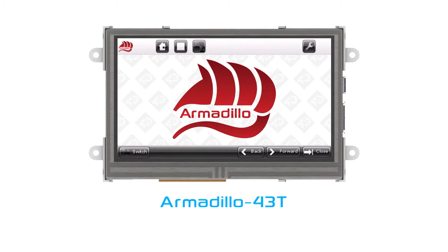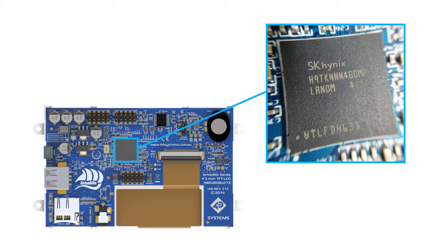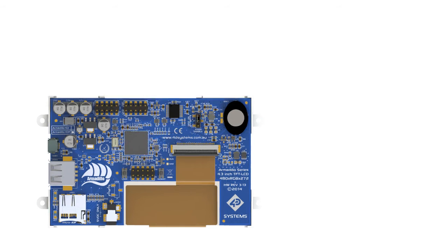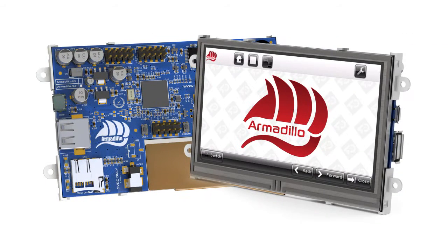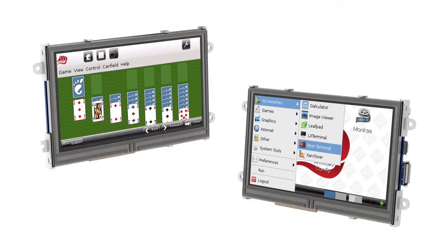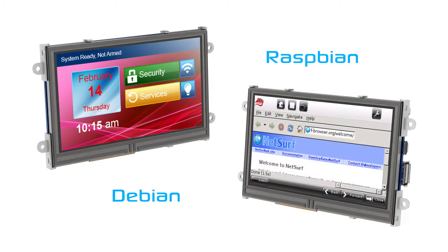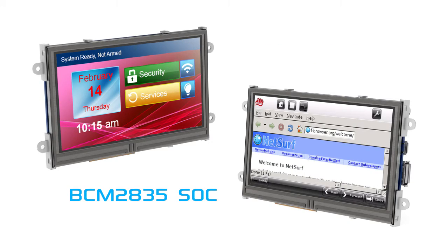The Armadillo 43T is our solution to the display and prototyping demands of our customers. The Armadillo runs on the BCM2835 SOC combined with the ARM1176JZF-S CPU processor with the Videocore 4 GPU in a single package. The Armadillo 43T is developed to utilize the Armadillon operating system, which is largely based on Raspbian or Debian OS and optimized for the BCM2835 SOC.